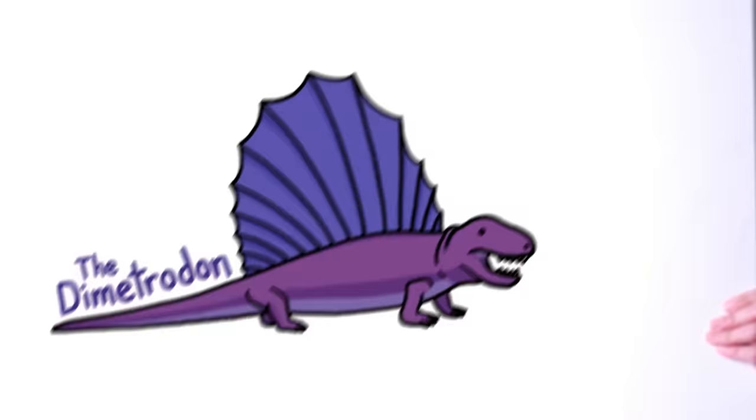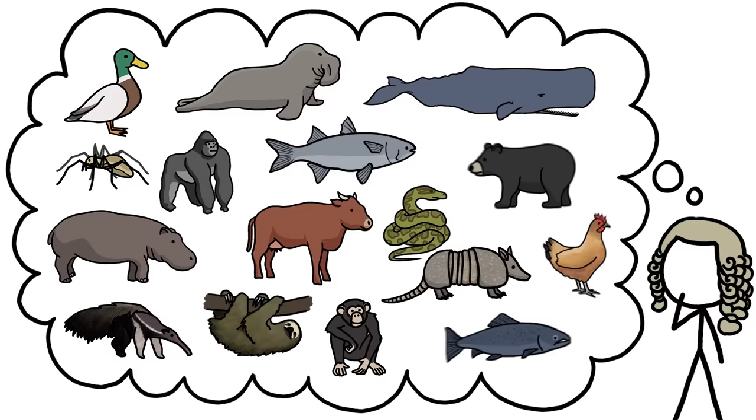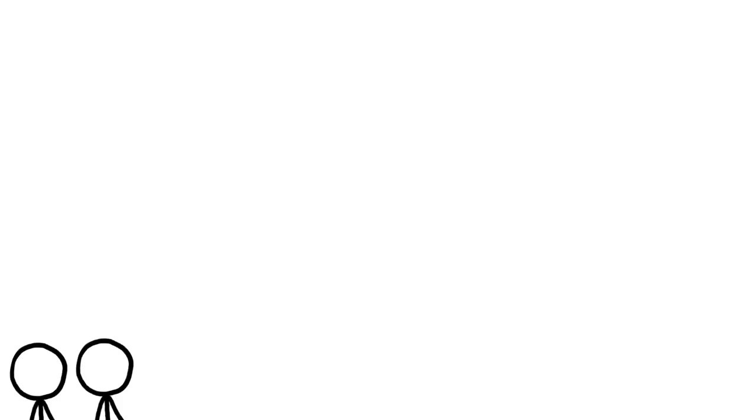This is not a dinosaur, but it used to be. For centuries, as we tried to make sense of the diversity of life on Earth, we created animal families according to looks alone. And dinosaurs were basically anything that was big and scary and scaly and dead. But that doesn't actually make a lot of sense.